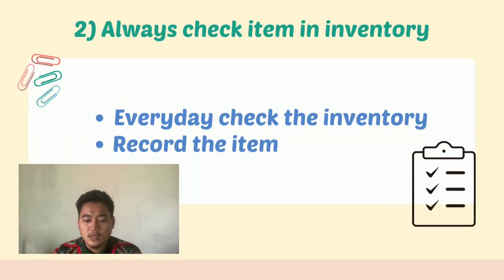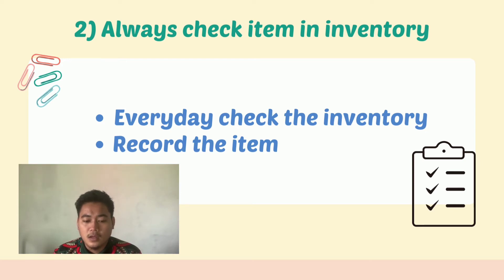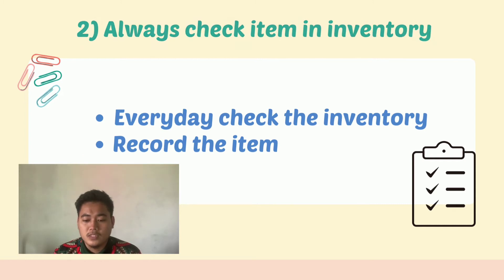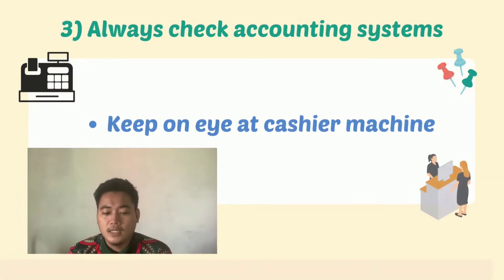Second, always check items in the inventory. The issue of loss of appliance tools in a restaurant often happens. Every day before and after opening the restaurant, they always conduct a check on their items in inventory, and the items must always be recorded for future reference. Third, always check the accounting system. To avoid fraud among staff, the owner must always keep an eye on the cashier machine.